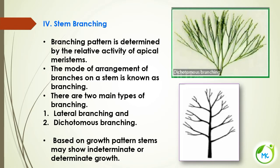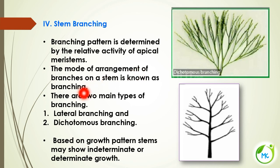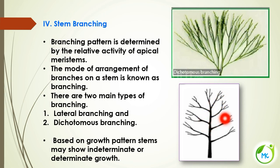The next topic is stem branching. The branching pattern is determined by the relative activity of apical meristem — the growing tip of the stem. The mode of arrangement of branches on a stem is known as branching. There are two types: lateral branching, where many lateral branches are produced from the main axis; and dichotomous branching, where the main stem bifurcates into two, with diffuse further branching.